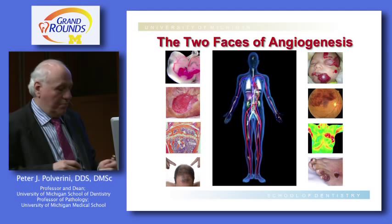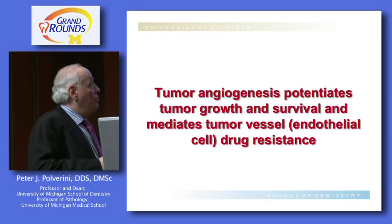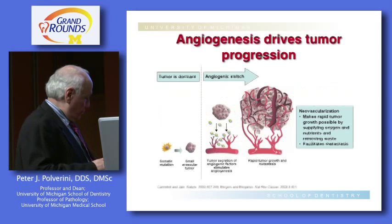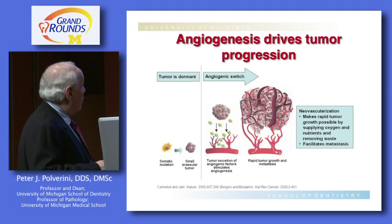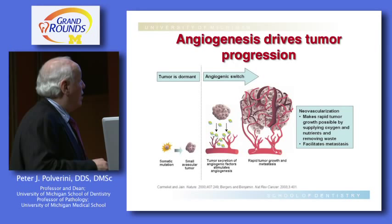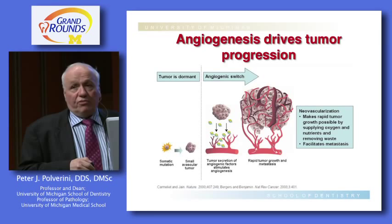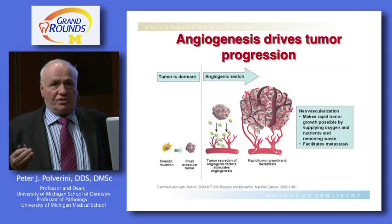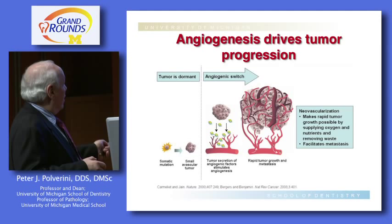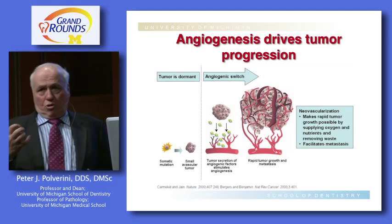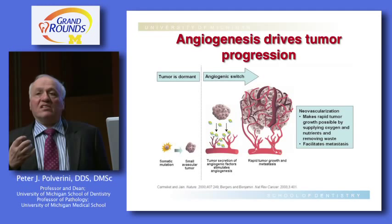We'll talk about how tumor angiogenesis potentiates tumor growth and how it's involved in survival and drug resistance. The paradigm for this study was laid out by Judah Folkman, who developed the concept that tumors are angiogenesis-dependent — without blood vessels, tumors would not grow. Following somatic mutation, one frequently gets a small collection of dormant tumor cells that exist undetected in tissues for years. At some point, an event called the angiogenic switch occurs.